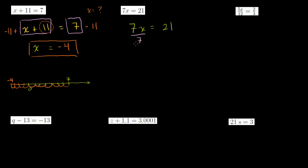If I do it on the left-hand side of the equation, I have to do it on the right-hand side. 7x is equal to 21, so dividing both sides by 7 gives: 7 times x divided by 7 is just x, and 21 divided by 7 is equal to 3. So the solution is x is equal to 3. You can verify: 7 times 3 is indeed 21.